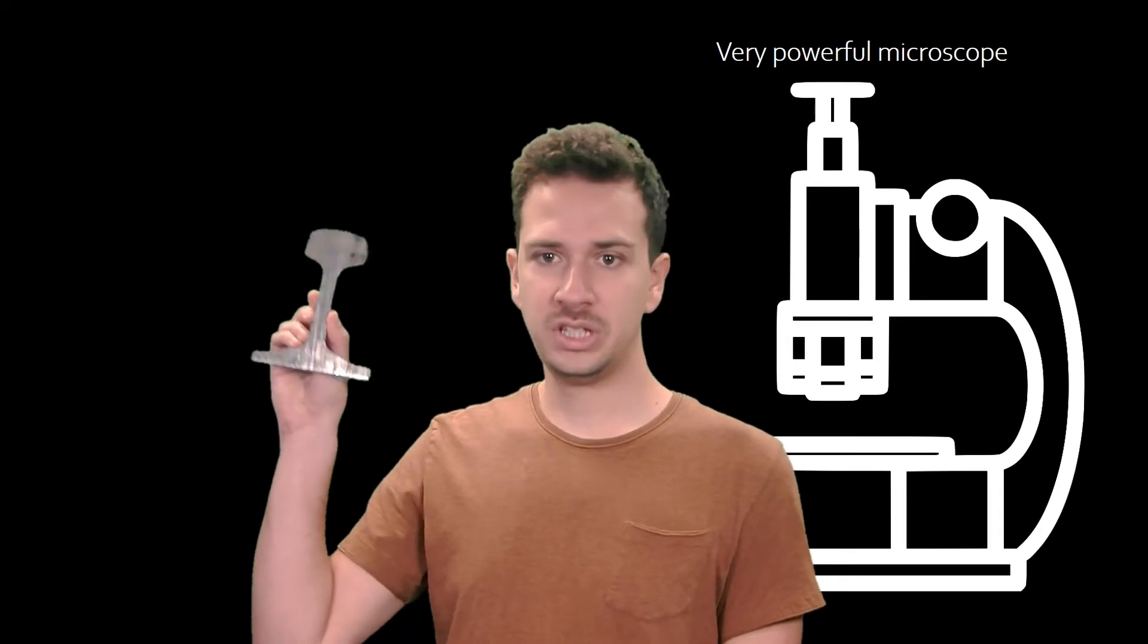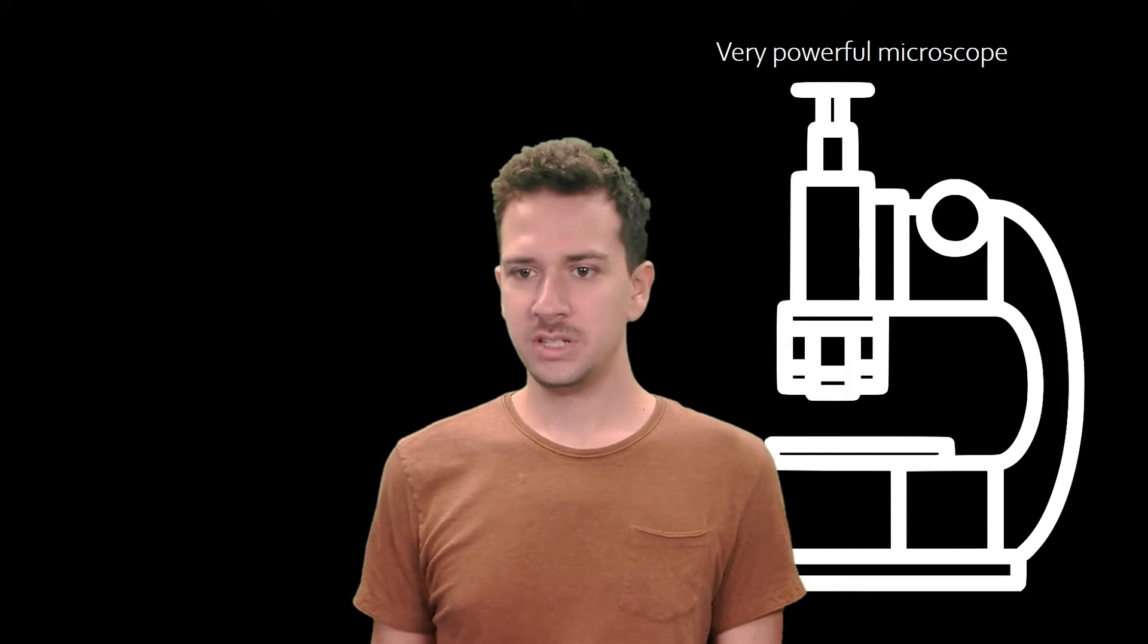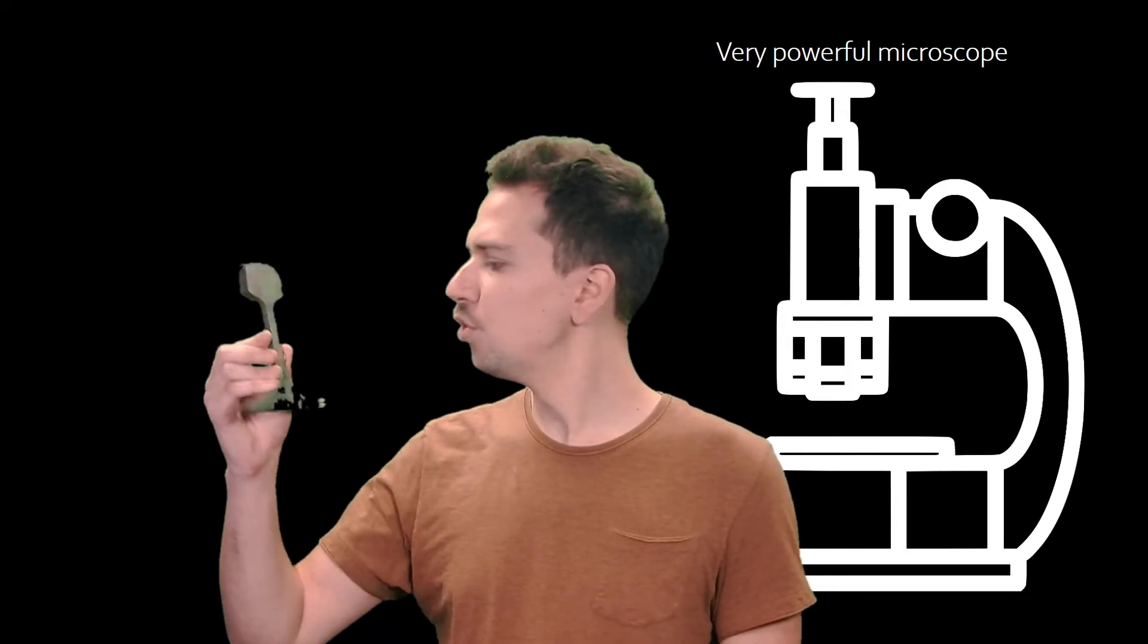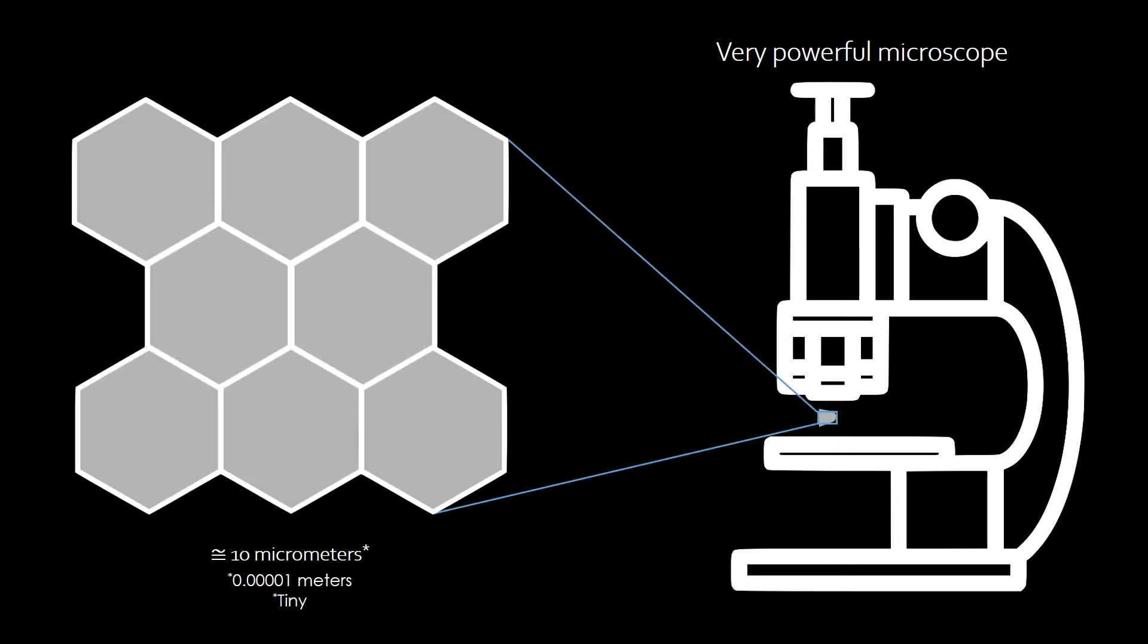But what about steel? Well, turns out that steel is also made of small building blocks. They are too small for us to see with the naked eye. But if you put steel under a microscope, you see that it is entirely made of crystals. Yes, steel is actually made of many and many crystals stuck together.